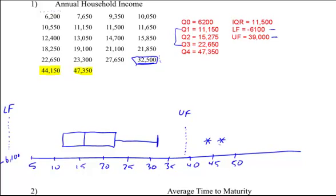My other one, I look inside my fence. So here's my fence right here. My first value inside my fence is at $6,200. So $6,200 is about right here. And there's my other whisker.